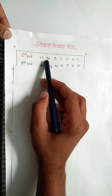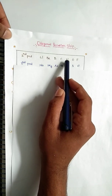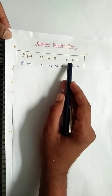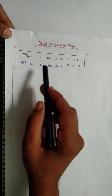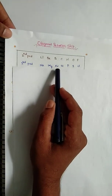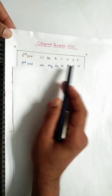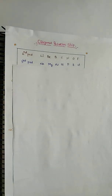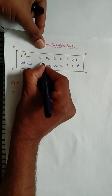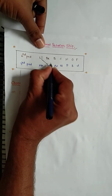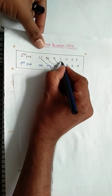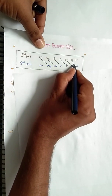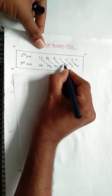The second period elements are lithium, beryllium, boron, carbon, nitrogen, oxygen, and fluorine. These elements show similarities to the diagonally located third period elements: sodium, magnesium, aluminum, silicon, phosphorus, sulfur, and chlorine. The diagonal pairs are: lithium-magnesium, beryllium-aluminum, boron-silicon, carbon-phosphorus, nitrogen-sulfur, and oxygen-chlorine.